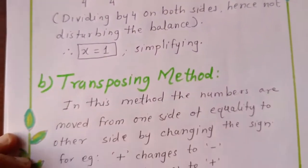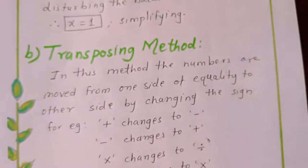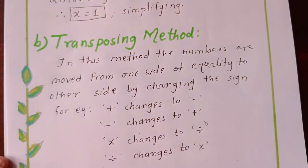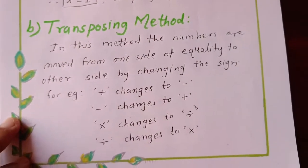The next one is transposing method. In this method, the numbers are moved from one side to equality to other side by changing the sign.